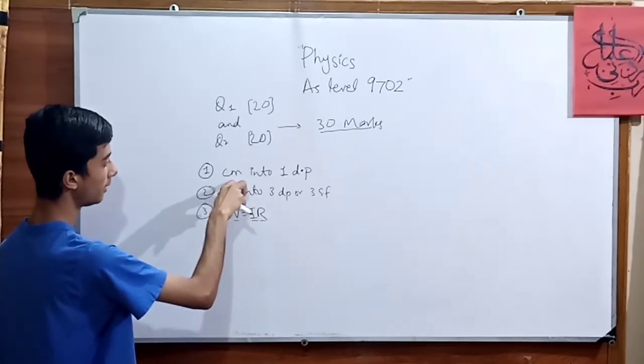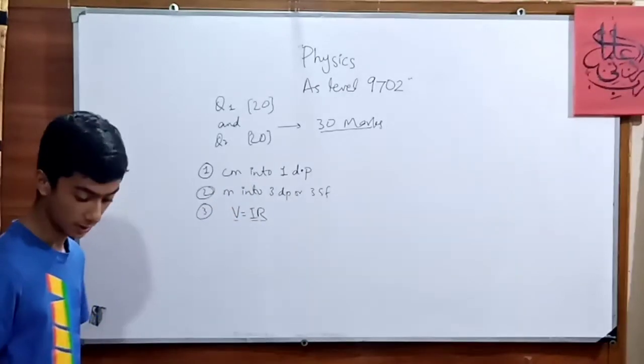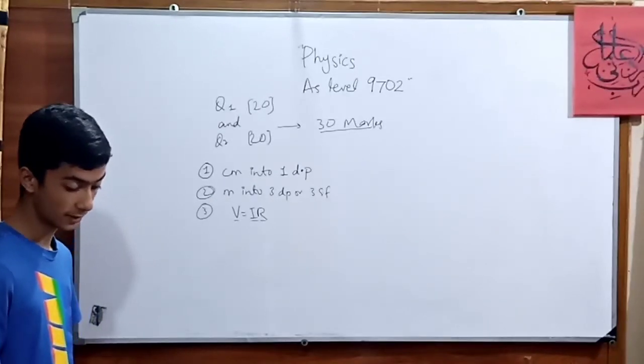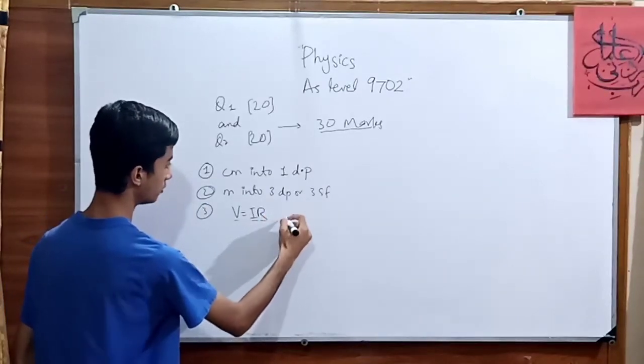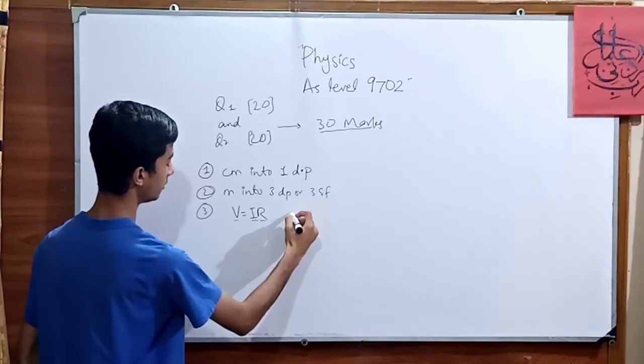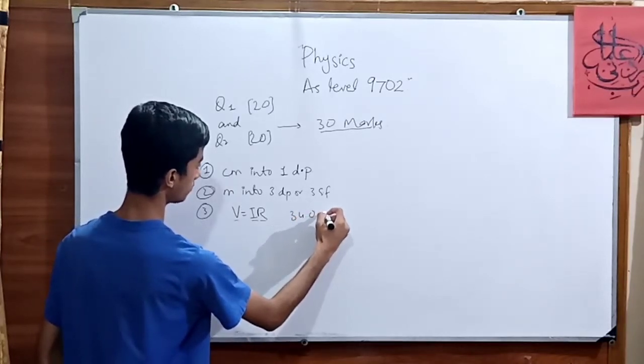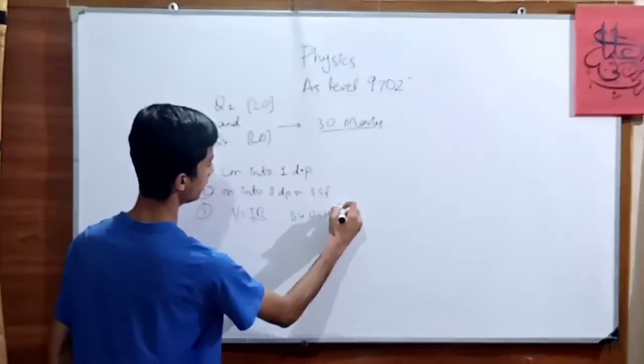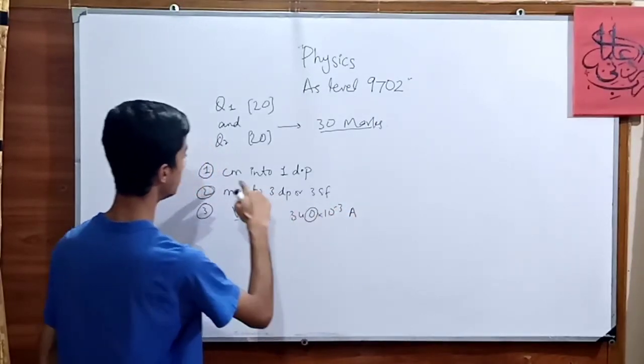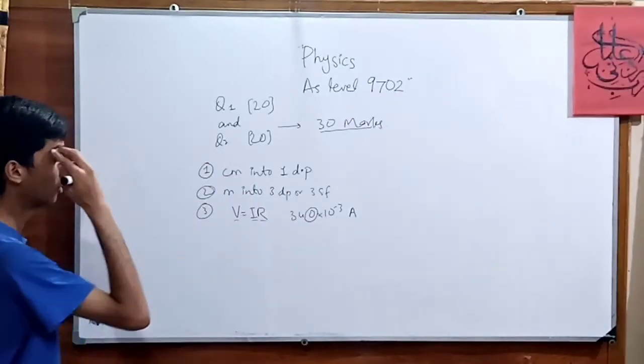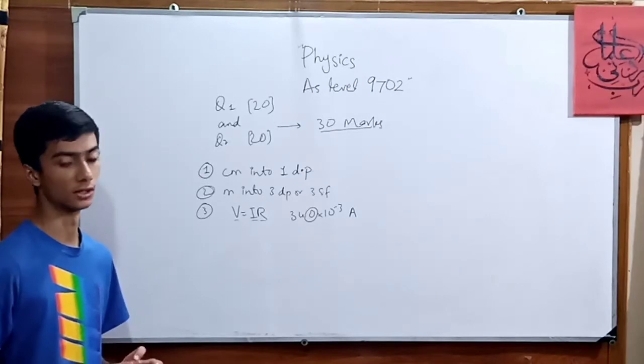As you all know that, first of all, it does come in the centimeter. The centimeter already discussed in our sequence, so we just need to confirm that. Whenever we are just writing the ampere in any of the amount, so it should be 1dp as well. For example, 34.0 exponential minus 3 ampere. It should be at least 1dp if it comes with a centimeter. So both of them, the same places should be equal with each other.